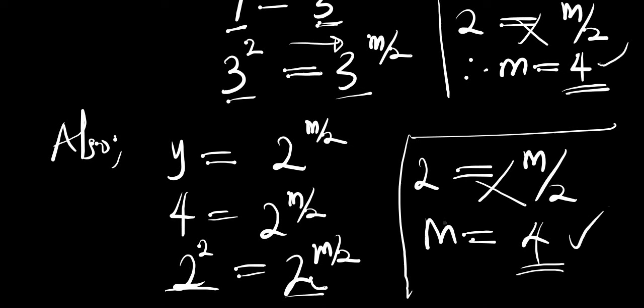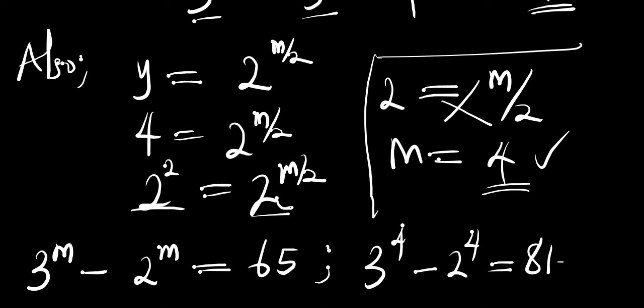We can also check if what we solved is correct. Recall the problem: 3 to the power of m minus 2 to the power of m equals 65. If m equals 4, we have 3 to the power of 4 minus 2 to the power of 4, which equals 81 minus 16, which equals 65. This confirms that m equals 4 satisfies the equation. That is it for the video — thank you and goodbye.